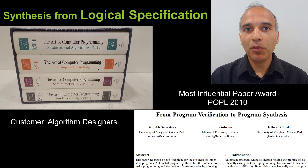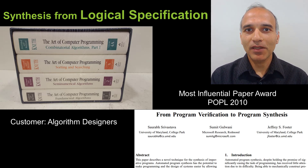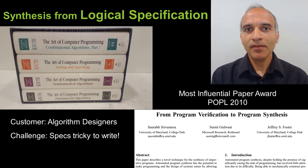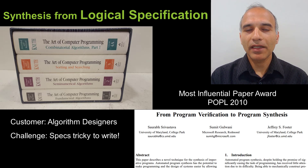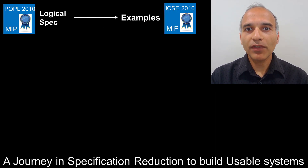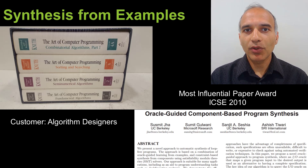Coincidentally, this popular 2010 paper recently also won the most influential paper award — so much for vindictive inspiration. This paper made us realize that logical specs are too complicated. We wondered: what if the user expresses intent using examples? But examples are extremely ambiguous. That's where this ICSI paper shows that the user can be guided to provide the right set of examples to converge to the intended algorithm.